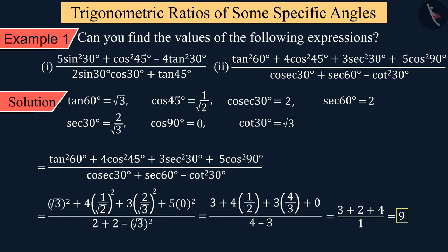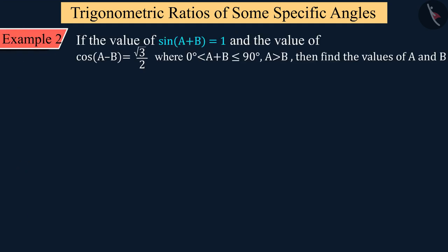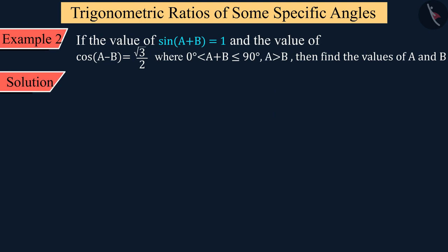Let us see another example. If the value of sin(A + B) is 1 and the value of cos(A − B) is √3/2, where A + B is greater than 0° and less than or equal to 90°, and A is greater than B, then what will be the values of A and B? Let's solve it.